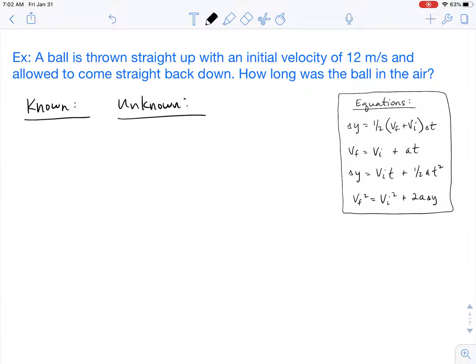Thanks for tuning in to another physics lesson with Mr. M. In this video, I'm going to show you how to do another free-fall type problem. So our problem for today looks like this: A ball is thrown straight up with an initial velocity of 12 meters per second and allowed to come straight back down. How long was the ball in the air?